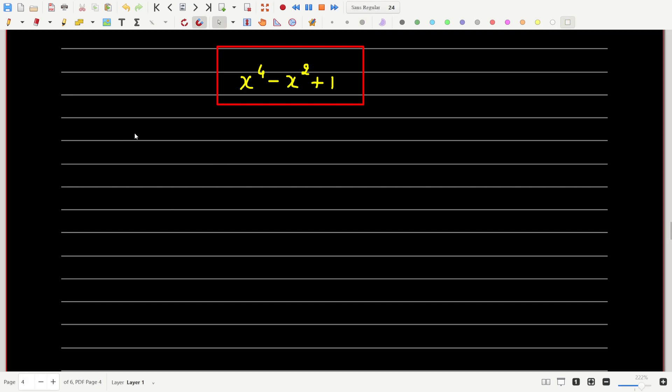So we have x power 4 minus x square plus 1 and I can write this as x power 4 plus 2x square plus 1 minus 3x square. And the idea here is to create a term that is of the form a square plus 2ab plus b square where a is equal to x square and b is equal to 1.